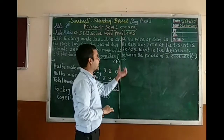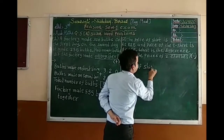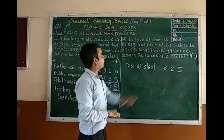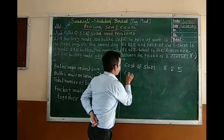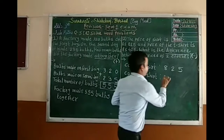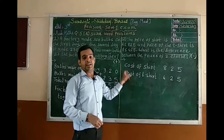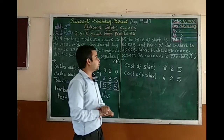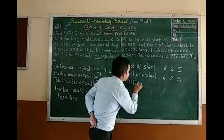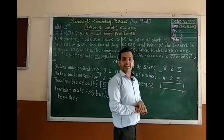Now let's see how we write the answer. First, what is given? The price of the shirt is given, so we write: cost of shirt — Rs. 825. Then the price of the t-shirt is given, so we write: cost of t-shirt — Rs. 425. You have to write these things compulsorily; if you don't write them, I will cut marks. Now we have to find the difference, so we use the sign of subtraction. 5 minus 5 is 0. Then 2 minus 2 is 0. And 8 minus 4 is 4.